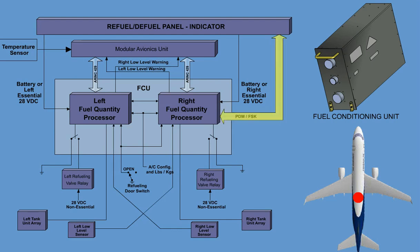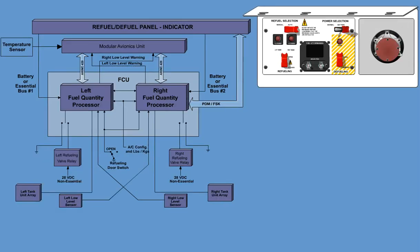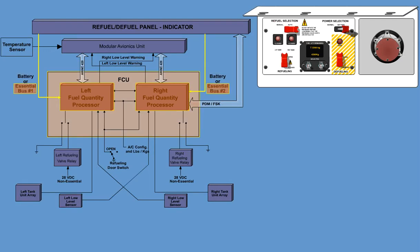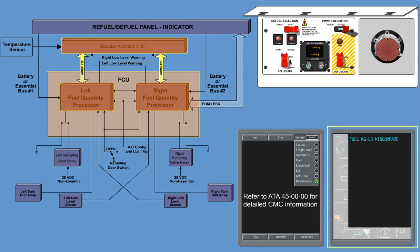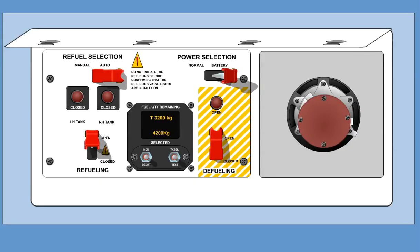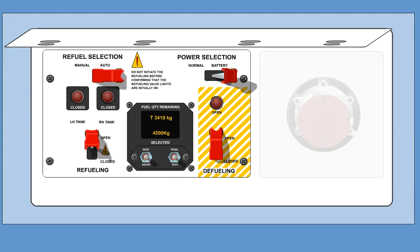Only the right-hand processor of the FCU interfaces with the repeater indicator via a serial data link. During automatic refueling, the FCU controls the left and right refueling valves. When the power selection switch on the refuel-defuel panel is selected to battery, the FCU is connected to the battery. In all other cases, it is powered by the essential DC bus 1 and 2. If the FCU detects a failure, it sends the failure information to the ICUS and to the CMC. If the fuel quantity cannot be accurately calculated, the indications are replaced by amber dashes. If this happens during automatic refueling, the refuel valves close.